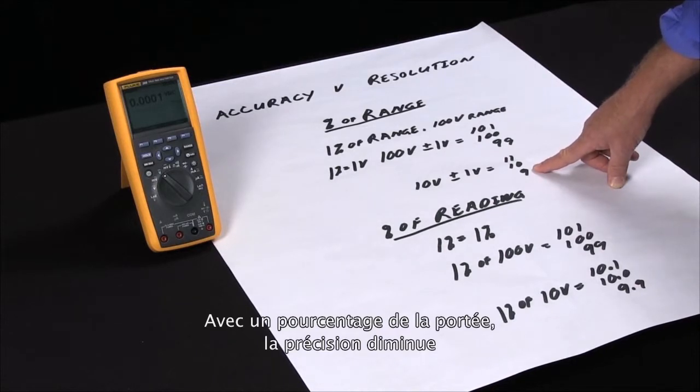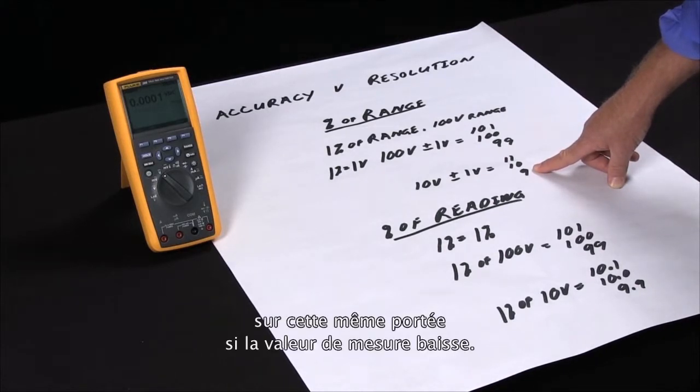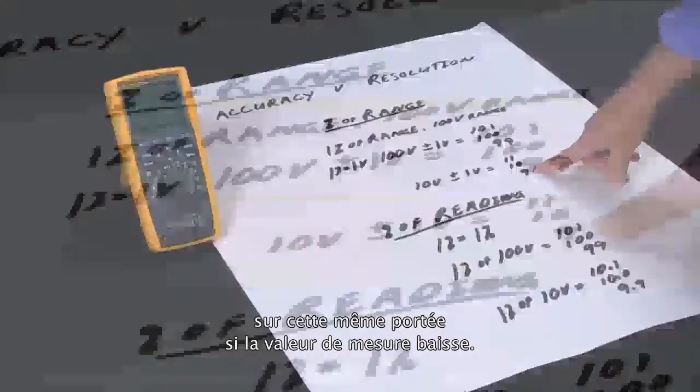So with percent of range, the accuracy actually decreases on the same range as you go down with the measurement values.